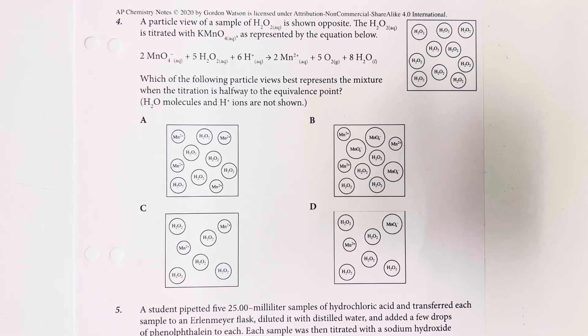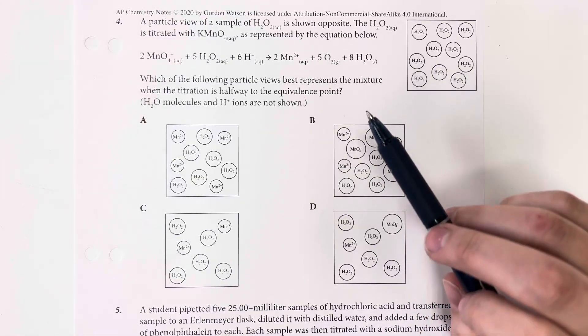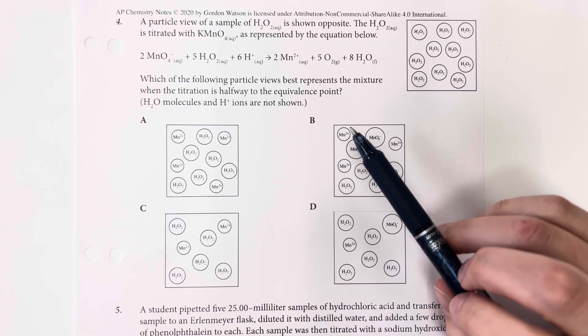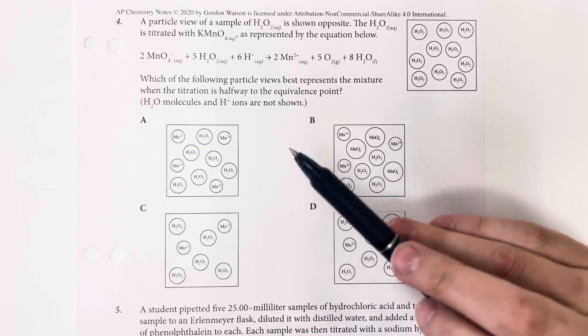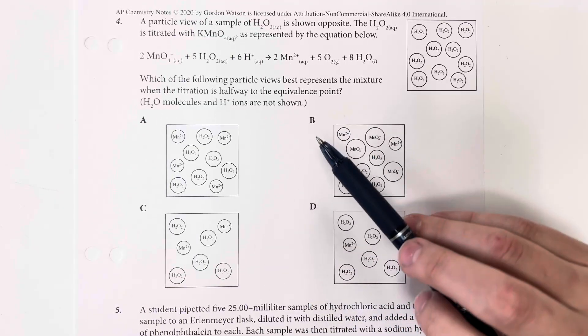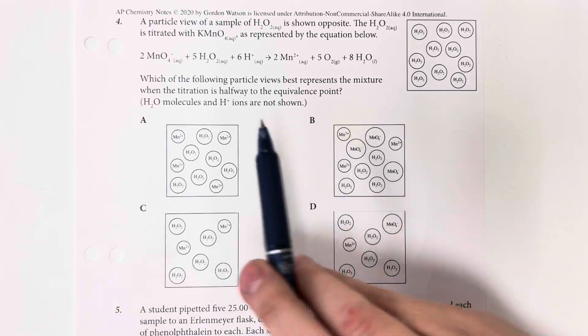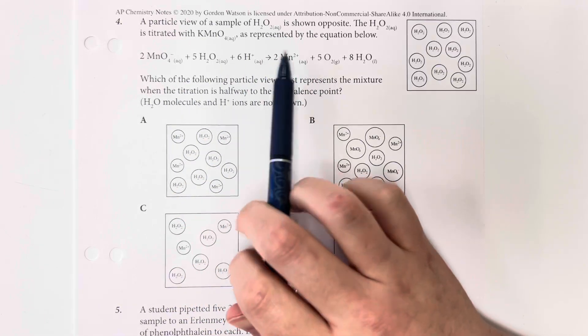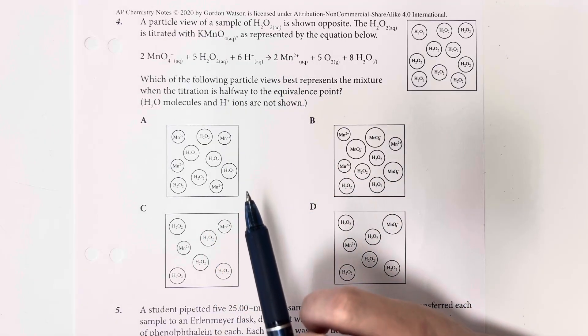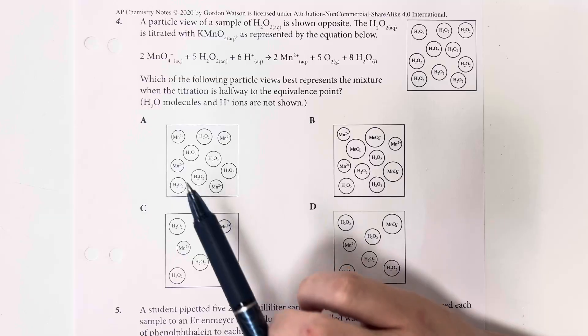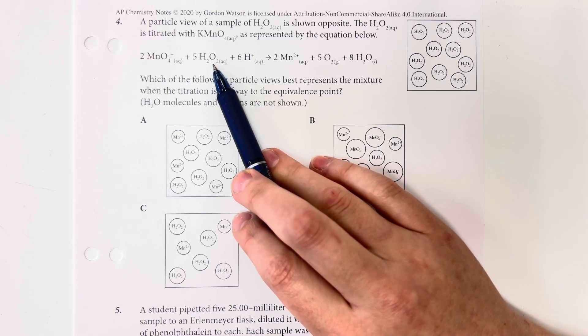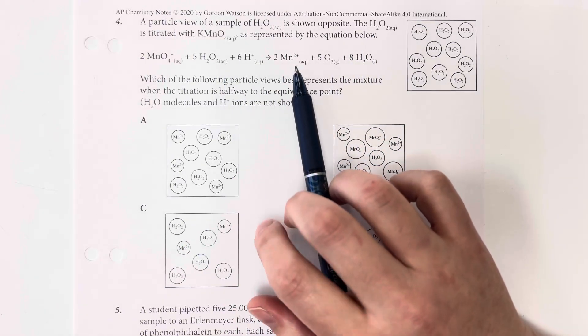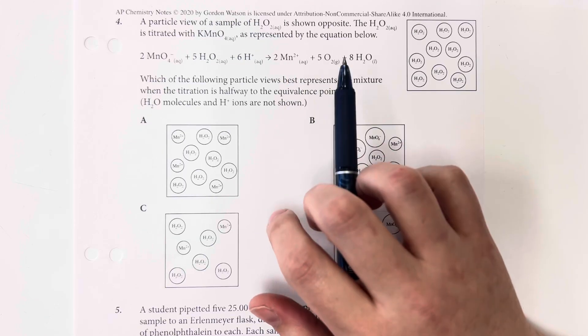A particle view of a sample of hydrogen peroxide is shown opposite. The hydrogen peroxide is titrated with potassium permanganate, as represented in the equation below. Which of the following particle views best represents the mixture when the titration is halfway to equivalence point? Water and hydrogen ions are not shown. So halfway to equivalence point means that I should see both reactants and products present within my solution. So I am dealing with some hydrogen peroxide, acid, and I should still see some manganese and oxygen.